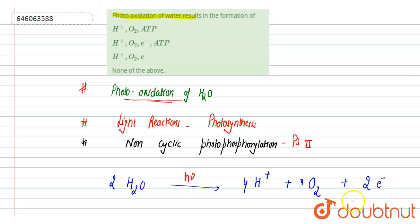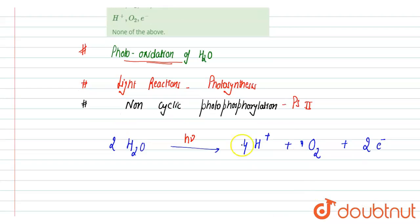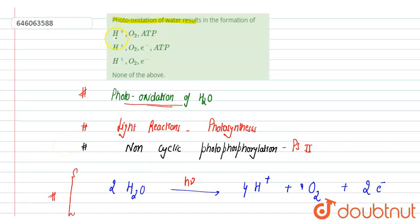So electrons are released, and then these protons enter into the lumen. Then proton gradient has been developed. It helps in the synthesis of ATP afterward. Otherwise, during photo-oxidation of water, no synthesis of ATP occurs.